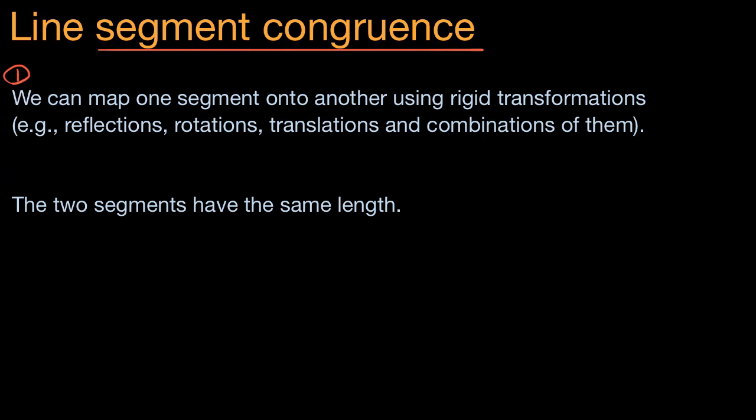Now what we're going to see in this video is that statement one is actually equivalent to statement two. Or another way of saying it is, if statement one is true, then statement two is true, and if statement two is true, then statement one is true. Or we can write it like this. We can map one segment onto another using rigid transformations if and only if the two segments have the same length.